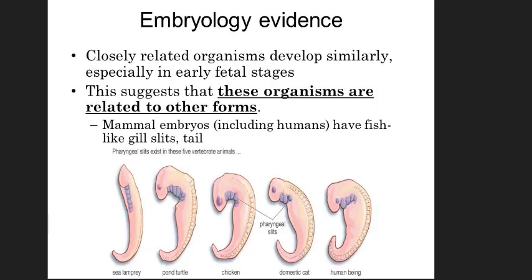Moving on to how these organisms are related to other forms, such as mammals, fish, and humans — including features like gills, slits, and tails. We're going to understand more about the embryological evidence.